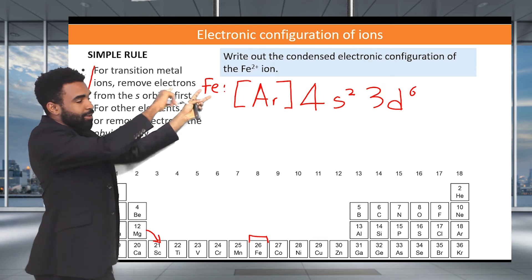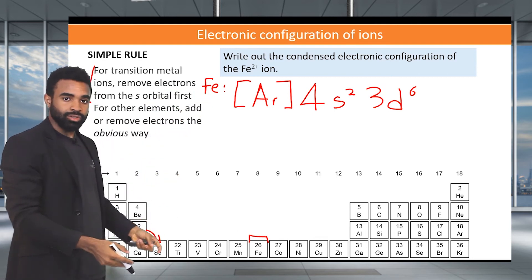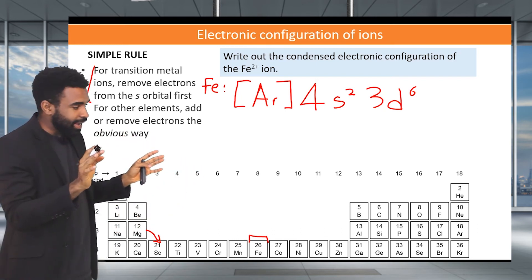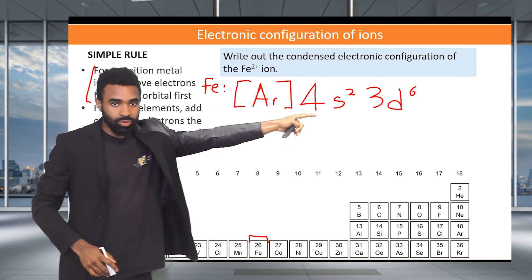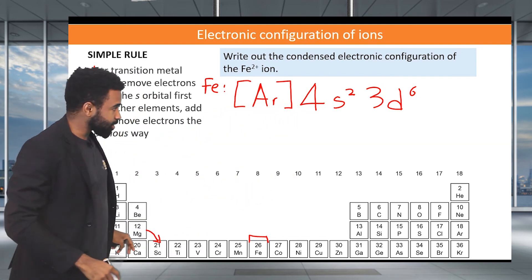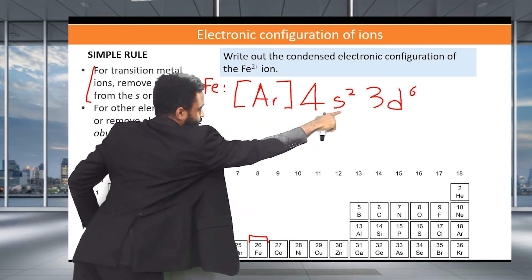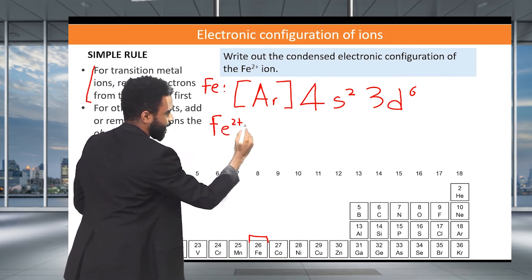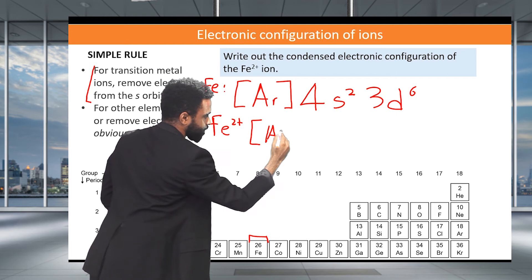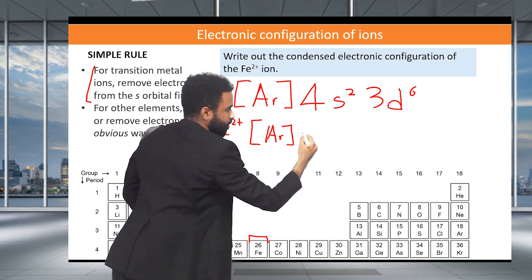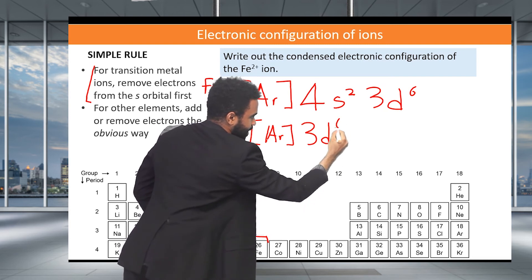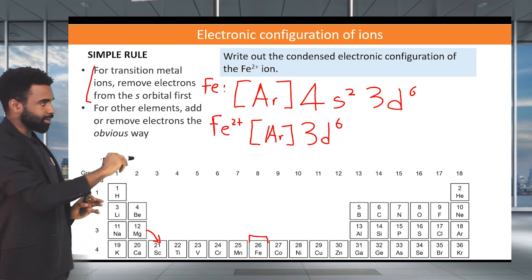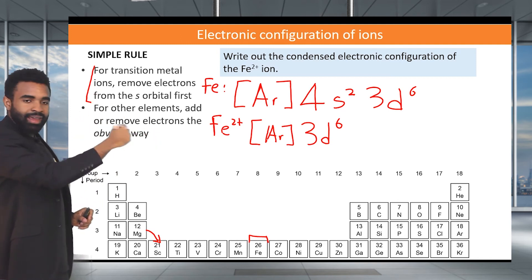Now what do we do to make it Fe2+ ion? To become Fe2+, it needs to what? Lose two electrons. How do we make it lose two electrons? If this were not a transition metal ion, we would go the obvious way. We would lose from that 3d. But since it is a transition metal, we lose from the s orbital first. So for Fe2+, therefore, we would have what? We would have the following. We'd have argon. And then we lose those 4s2, and we just have 3d6. And that would be the electronic configuration of Fe2+. Hopefully that makes sense. So we've covered basically the two rules now. The transition metal rule and the regular rule.